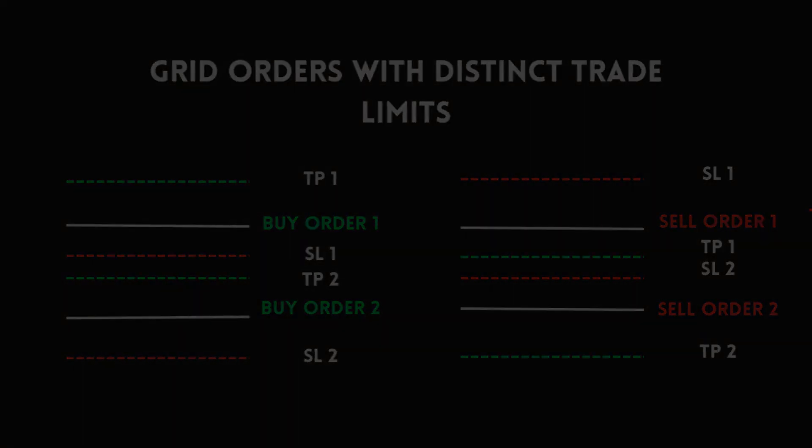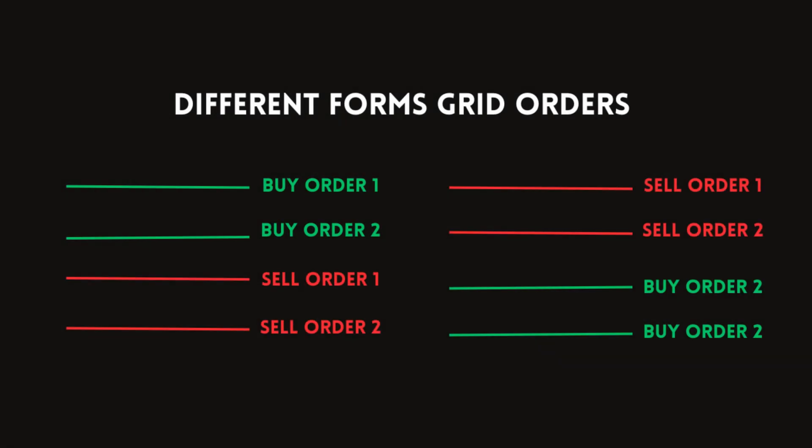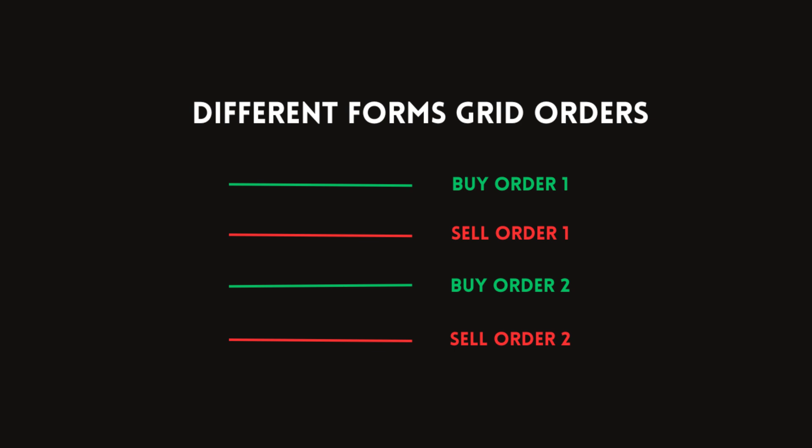Grid orders come in different forms. The first form you see here is sell, sell, buy, and buy. Then you can see buy, buy, sell, sell — or buy, sell, buy, sell, buy — making it like a double sell and then a double buy. It could actually be a single buy-sell or buy-buy and all of those combinations. It depends on your trading style how you're going to use it. There are even more forms than illustrated in this video, so learn the basics and then play around to find the best strategy that works for you.